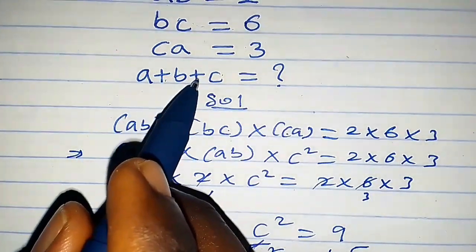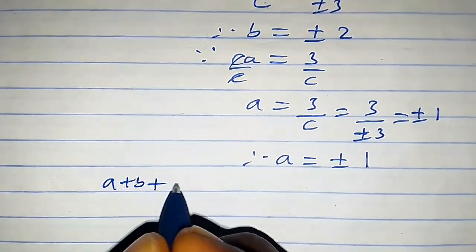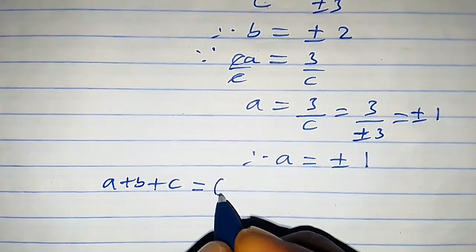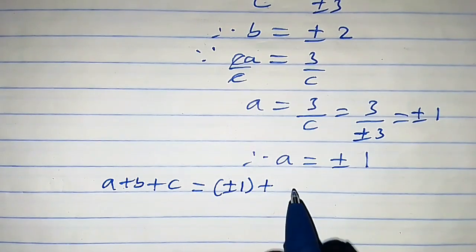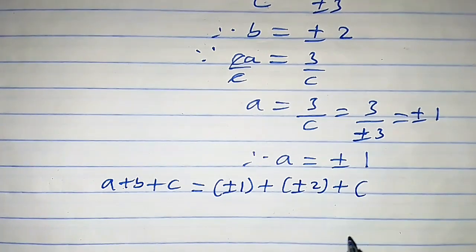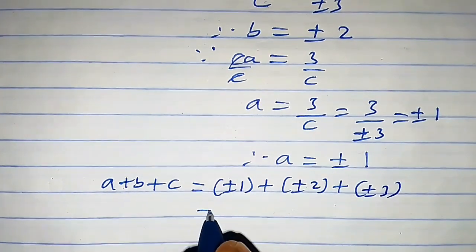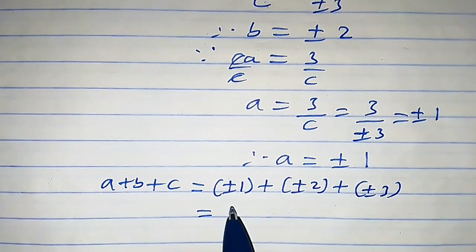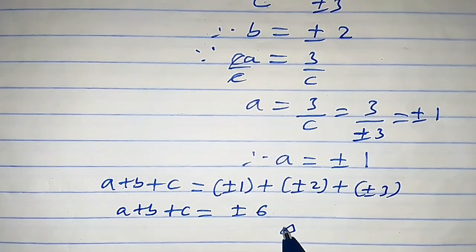Now we find a plus b plus c: that is plus or minus 1 plus plus or minus 2 plus plus or minus 3, which equals plus or minus 6. So the answer is plus or minus 6.